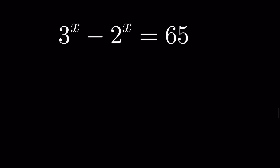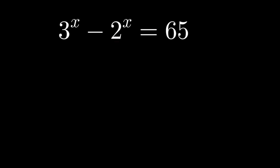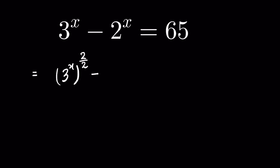3 raised to the power x minus 2 raised to the power x is equal to 65. We have to find the value of x. Let's raise 3^x to the power of 2/2, because we can raise it to the power of 2/2 and then cancel it with no change. So let's write it as (3^x)^(2/2) and do the same with (2^x)^(2/2), equal to 65.